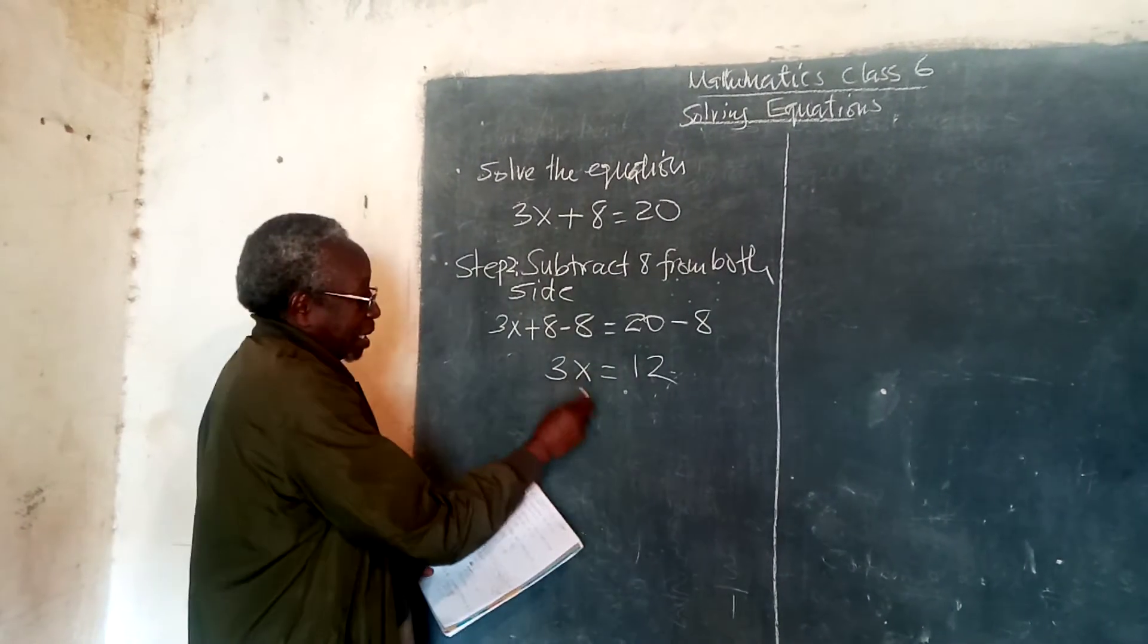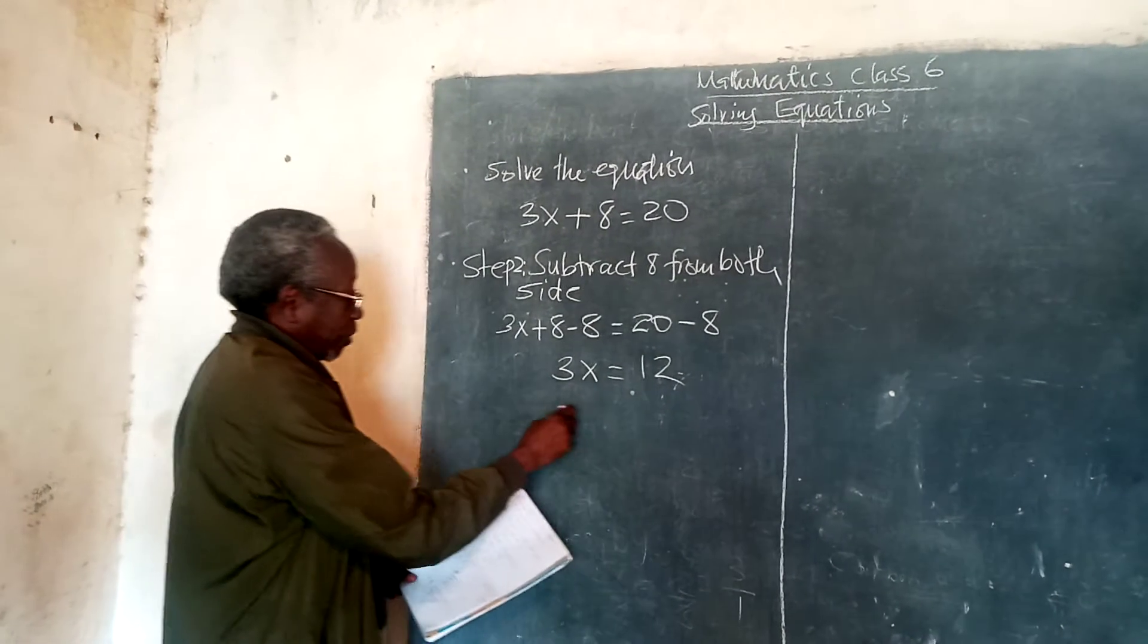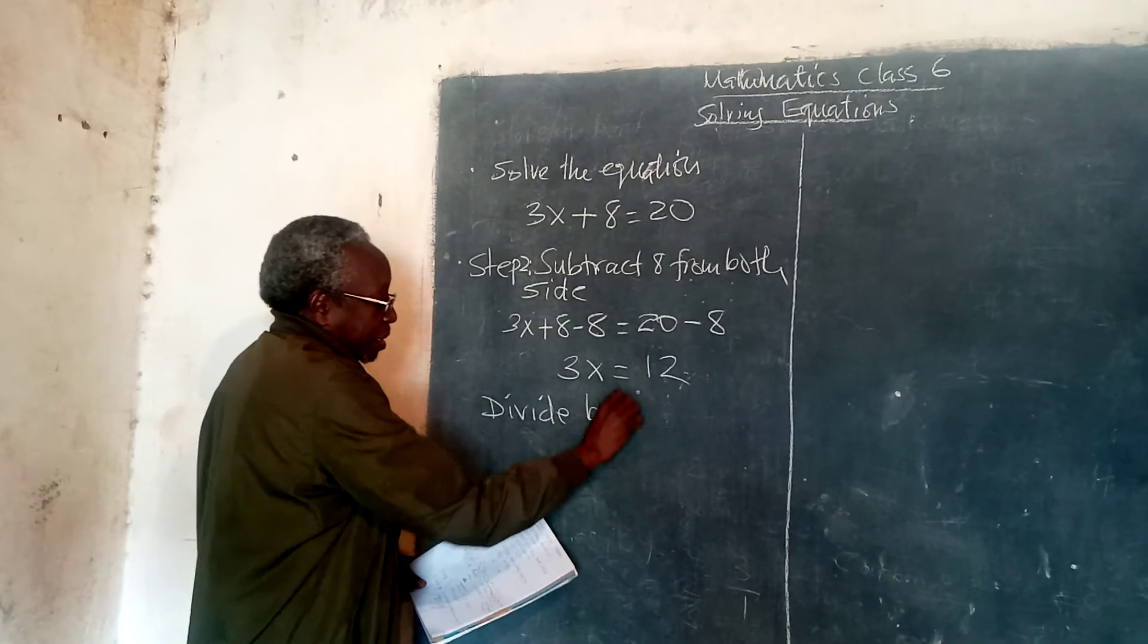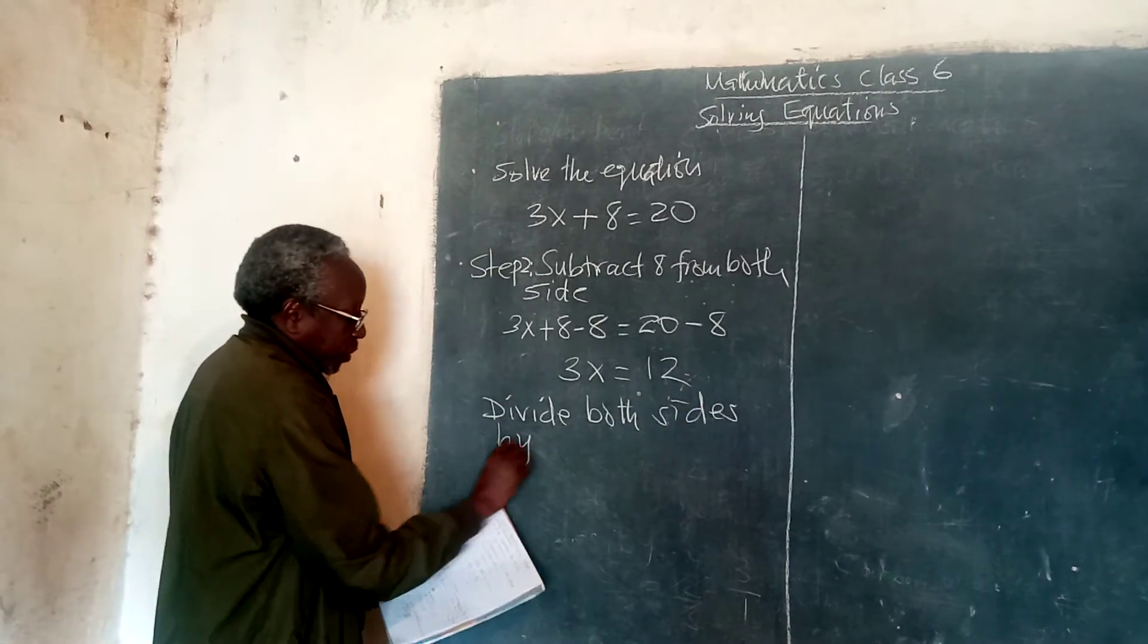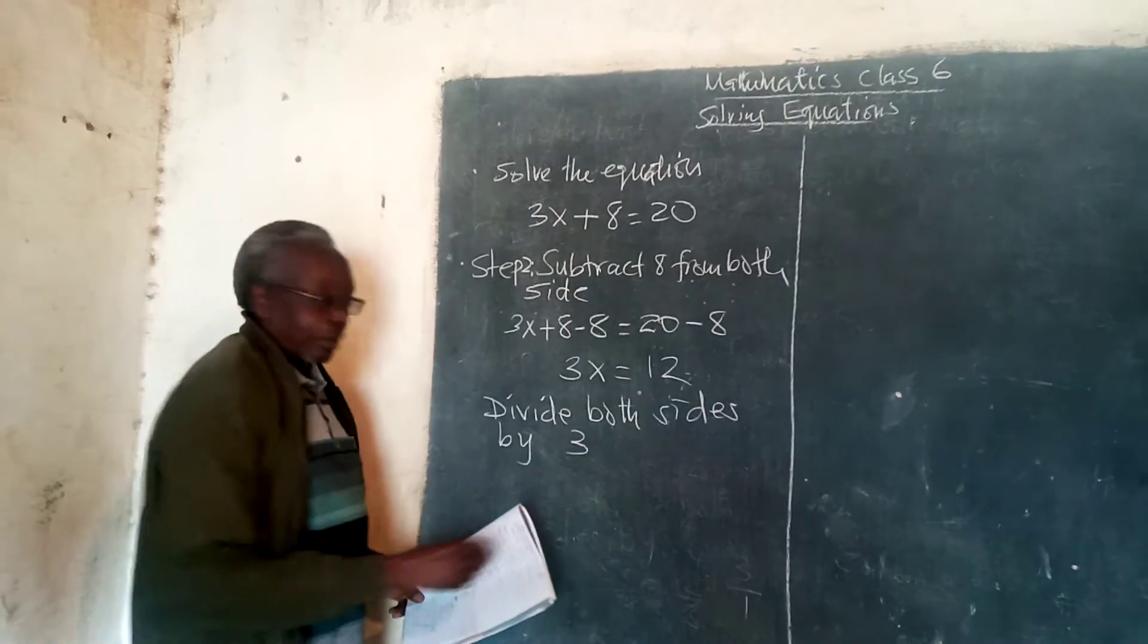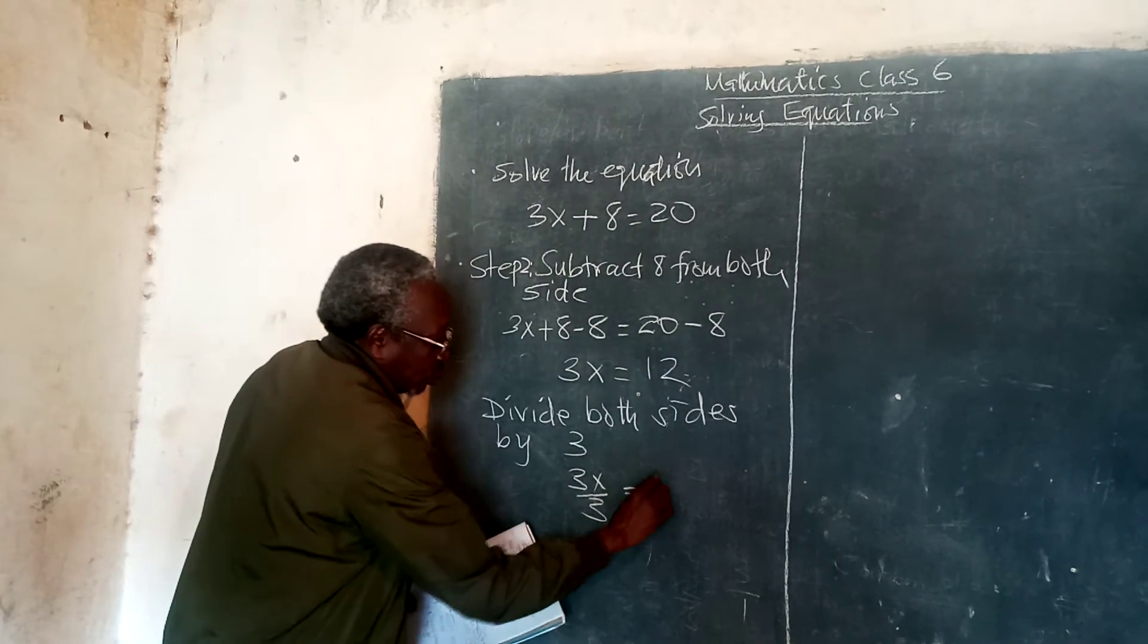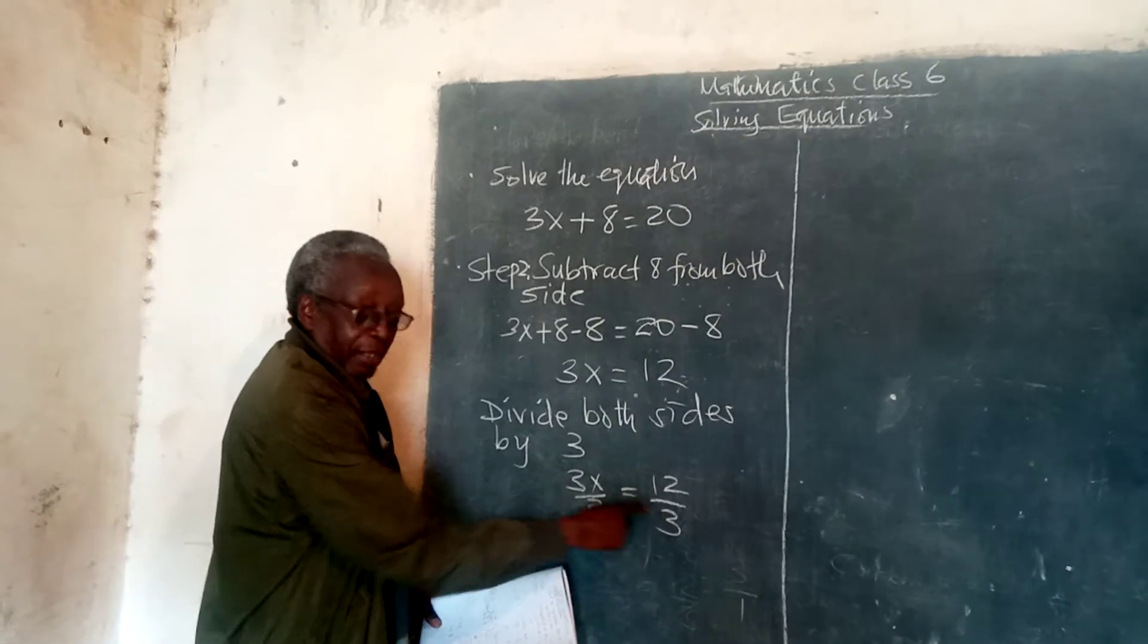The next step here is find the value of x. And in this case, therefore, we are going to divide both sides by 3. So, we have 3x, we divide by 3, is equal to 12, we divide by 3. So, we are dividing both sides by 3.